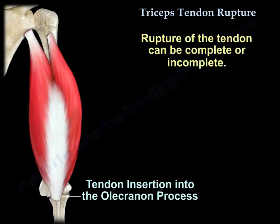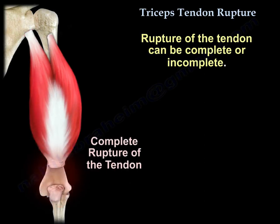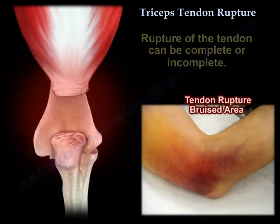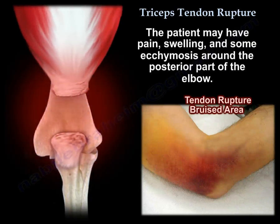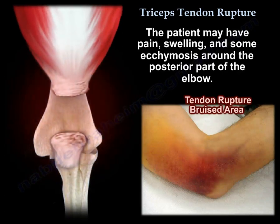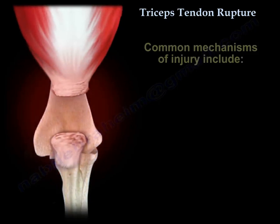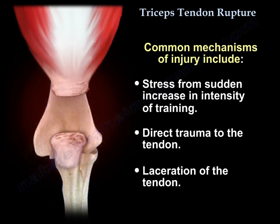Rupture of the tendon can be complete or incomplete. Here is an example of a complete rupture of the triceps tendon. The rupture occurs at the bony insertion of the tendon. The patient may have pain, swelling, and some ecchymosis around the posterior part of the elbow. Common mechanisms of injury include stress from a sudden increase in intensity of training, direct trauma to the tendon, or laceration of the tendon.